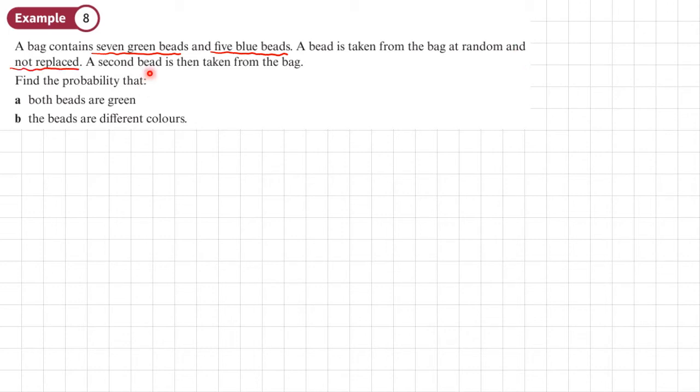So every time a bead is taken out, the total number of beads is going to go down. A second bead is then taken from the bag. Find a probability of these things here. OK, so the first thing we're going to do is you draw a tree diagram. So here's my tree diagram here.